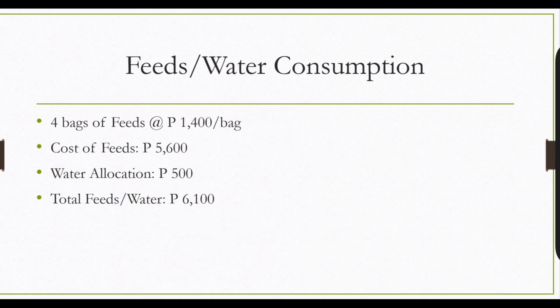The next component is feeds and water consumption. For 100 heads of chicken from day one up to harvest, they can consume up to 4 bags of feeds, so the cost will be 5,600 pesos, plus the water allocation of 500 pesos per month, for a total of 6,100 pesos. Feeds and water consumption is the highest expense you will incur in raising chickens.